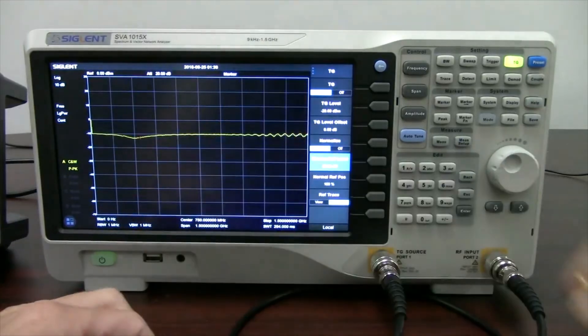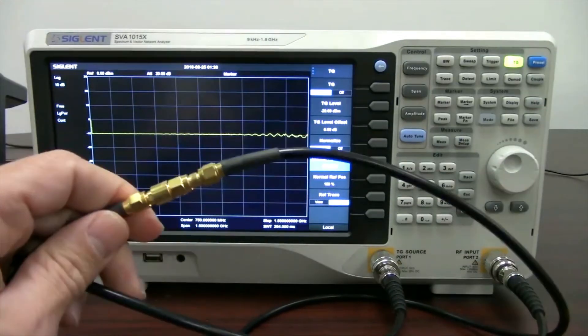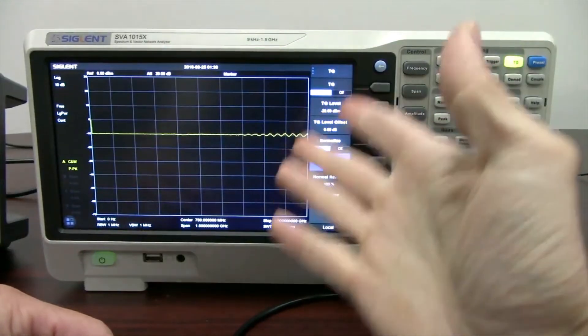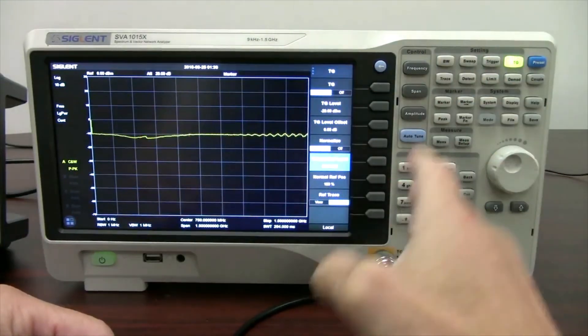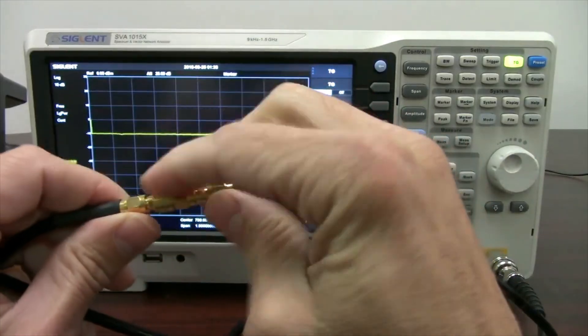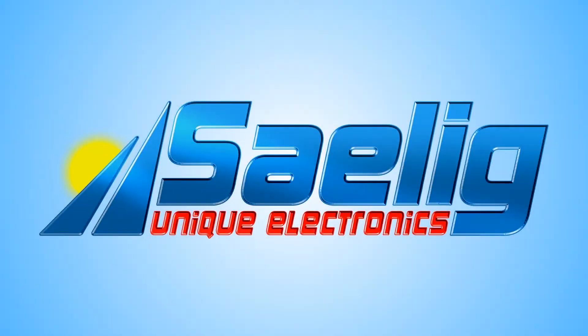This is the 20 dB attenuator, and now we've got the 10 dBm attenuator. So, using a spectrum analyzer with a tracking generator, or in this case our SVA, with the tracking generator, we can take a closer look at our devices like attenuators, and we can make sure that they're operating correctly.